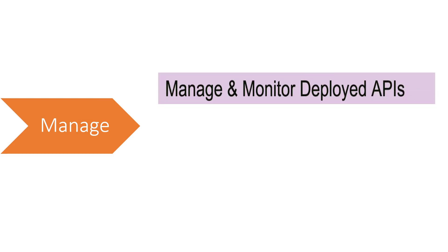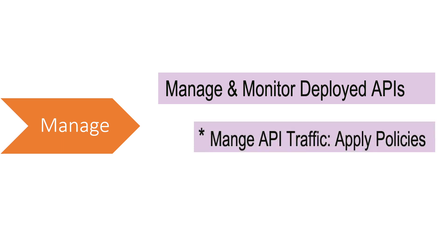The next important stage is the manage stage, where you do the management of your APIs. In this stage, API Manager is the major component that comes into the picture. You manage and monitor your deployed APIs, manage API traffic, and apply policies for API governance. Using MuleSoft API Manager, you can configure different types of policies like throttling policies, rate limiting policies, blacklisting and whitelisting policies, quota policies, and other available policies as required.